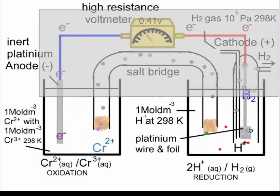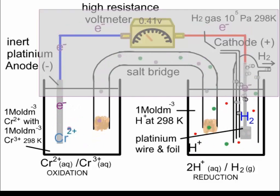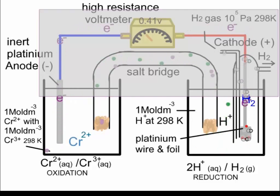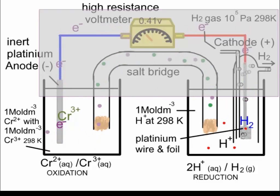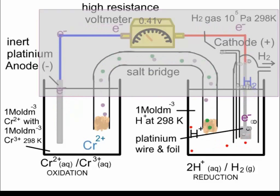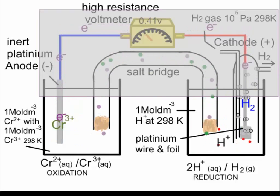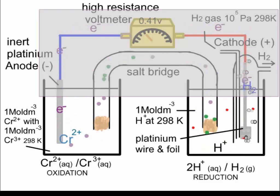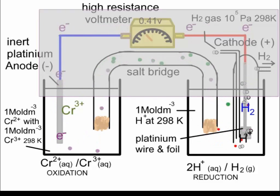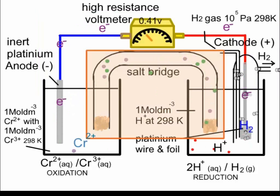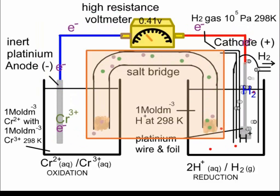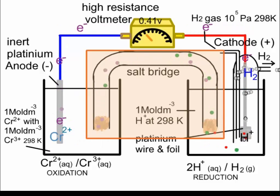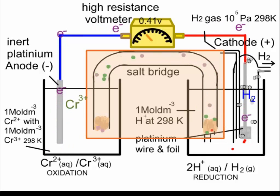In the left-hand half cell, Cr2+ ions are changing into Cr3+ ions, meaning there is a build-up of positive charge. This is counterbalanced by negative ions from the salt bridge — for example chloride ions or nitrate ions — entering that half cell to balance the positive charge building up. In this animation, the pink spheres represent the negative ions, chloride or nitrate ions.